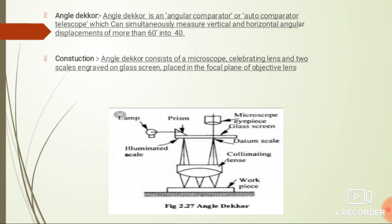Angle dekkor is an angular comparator or autocollimator telescope which can simultaneously measure vertical and horizontal angular displacements of more than 60 to 40. Angle dekkor consists of microscope, collimating lens, and two scales engraved on glass screen placed in the focal plane of objective lens. This is the diagram of angle dekkor.